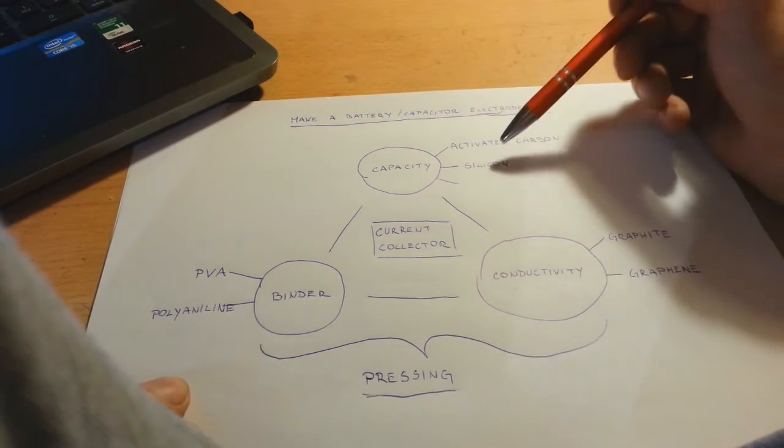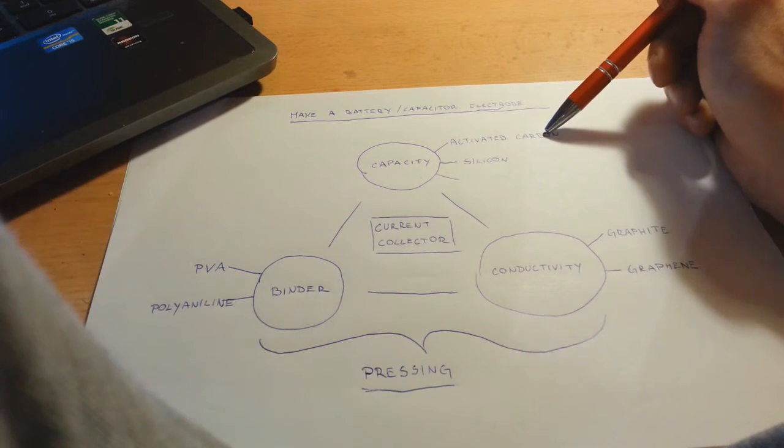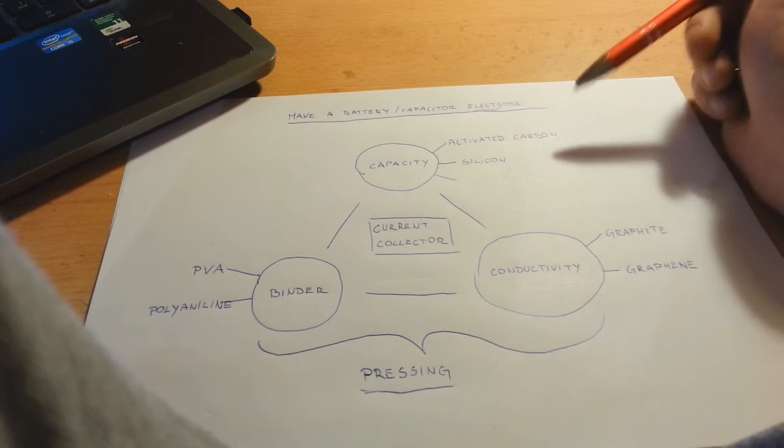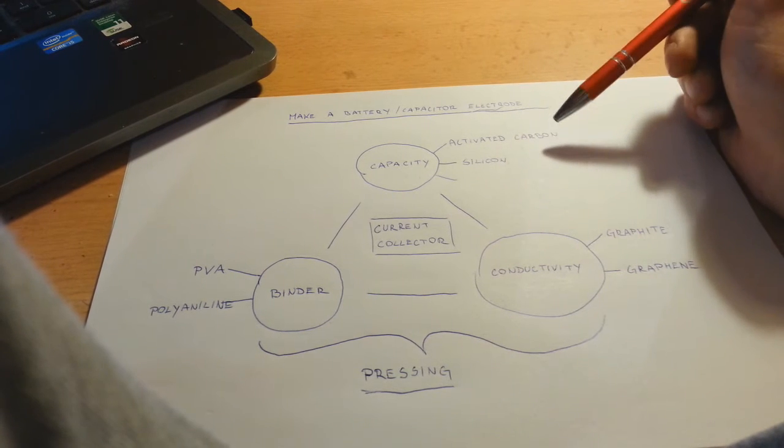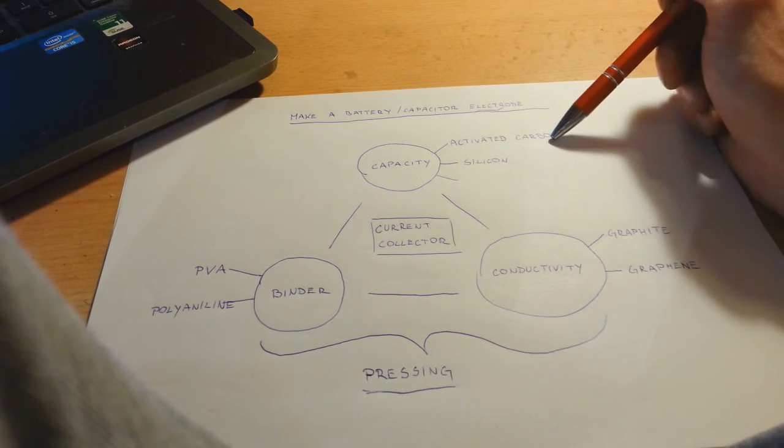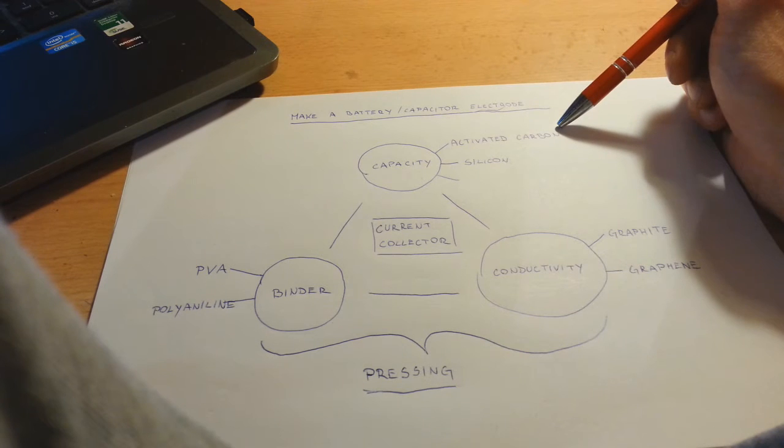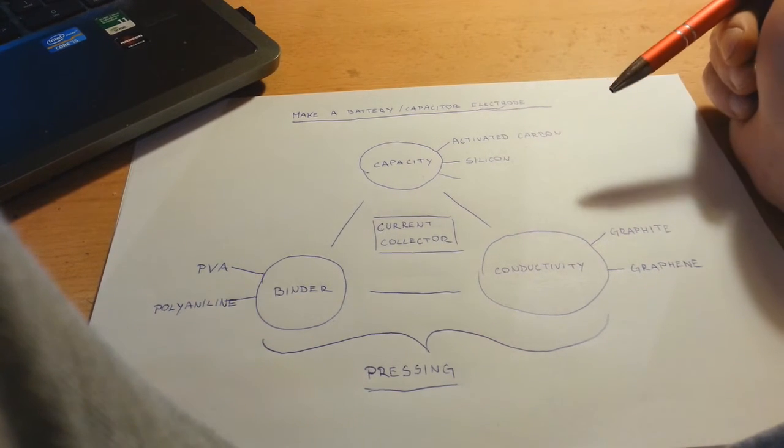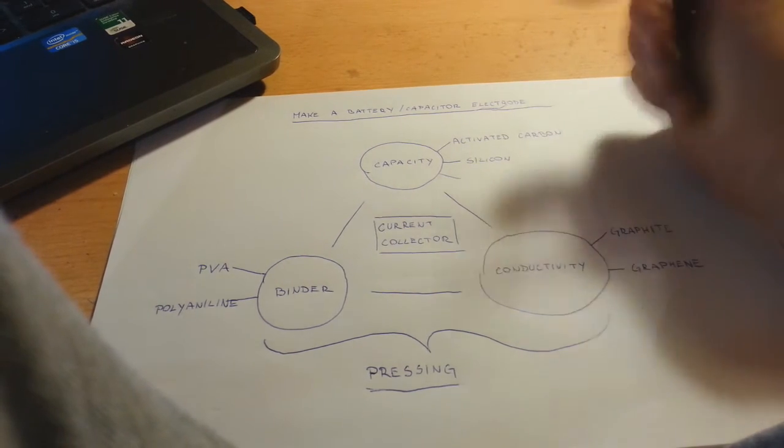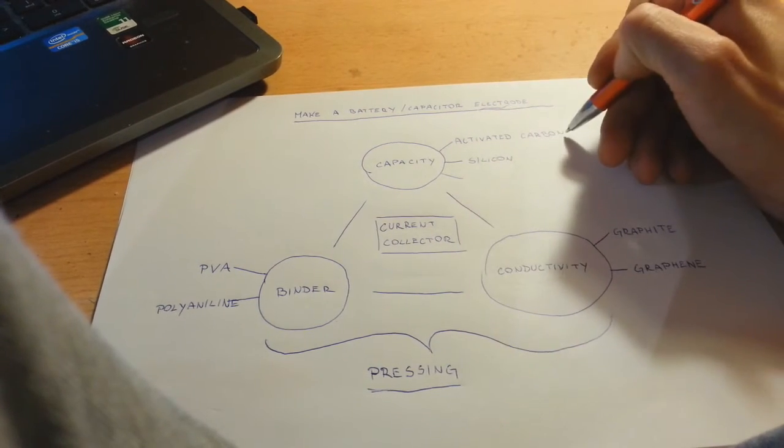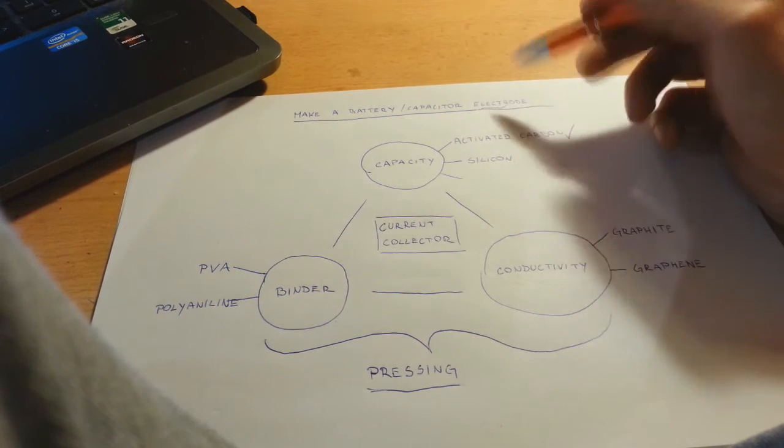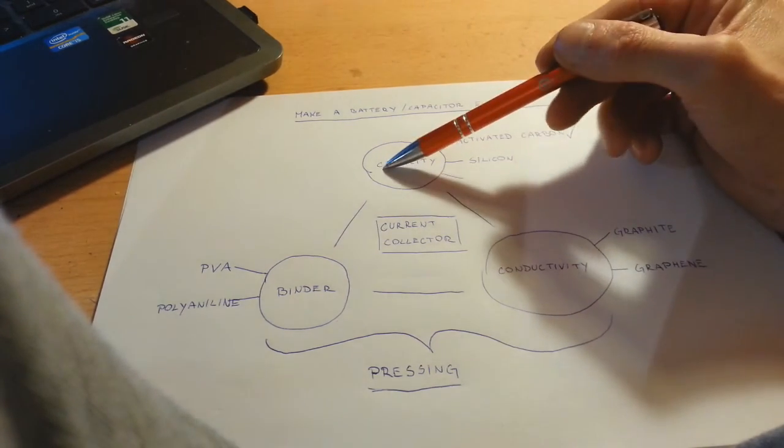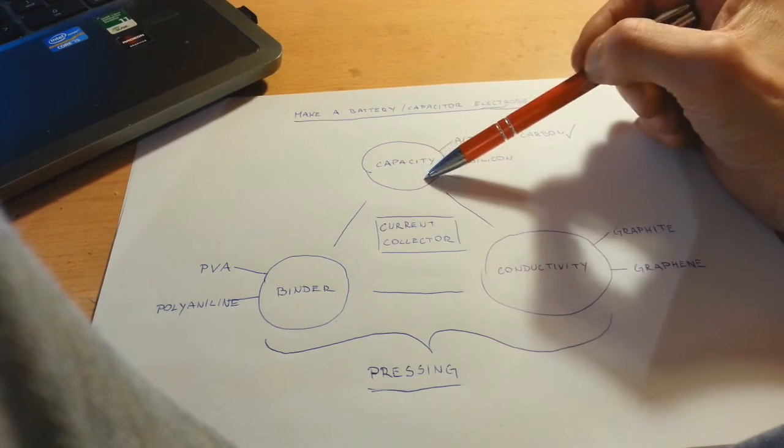The material for the capacity will be activated carbon because the activated carbon is really cheap and you can find very easily this material. So the active carbon is good material for the capacity for your battery.